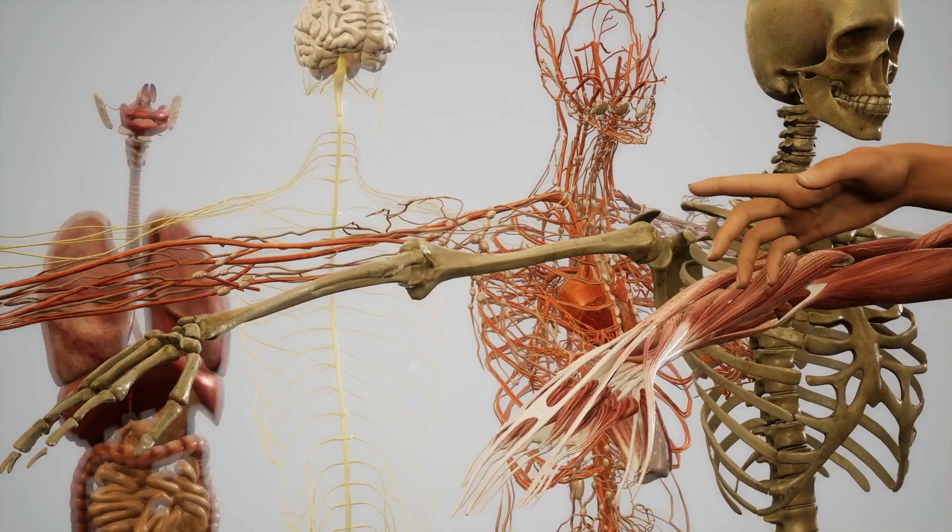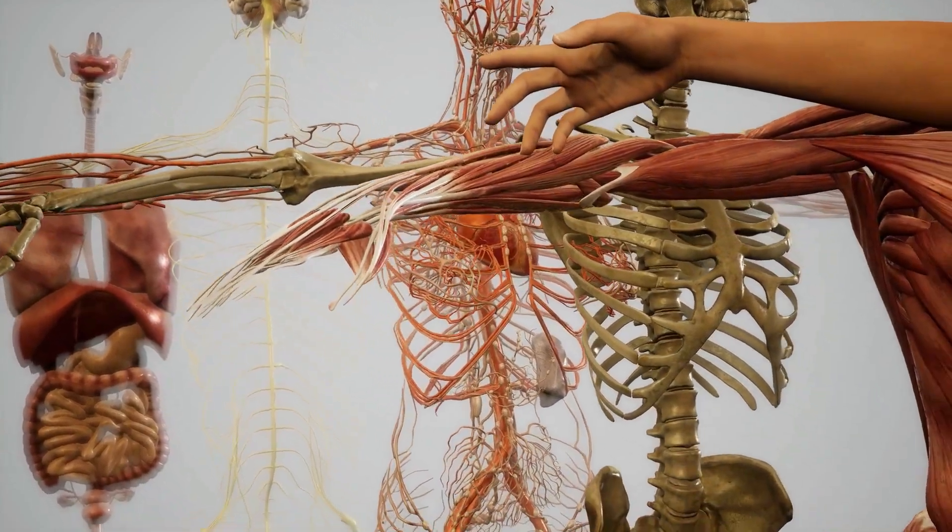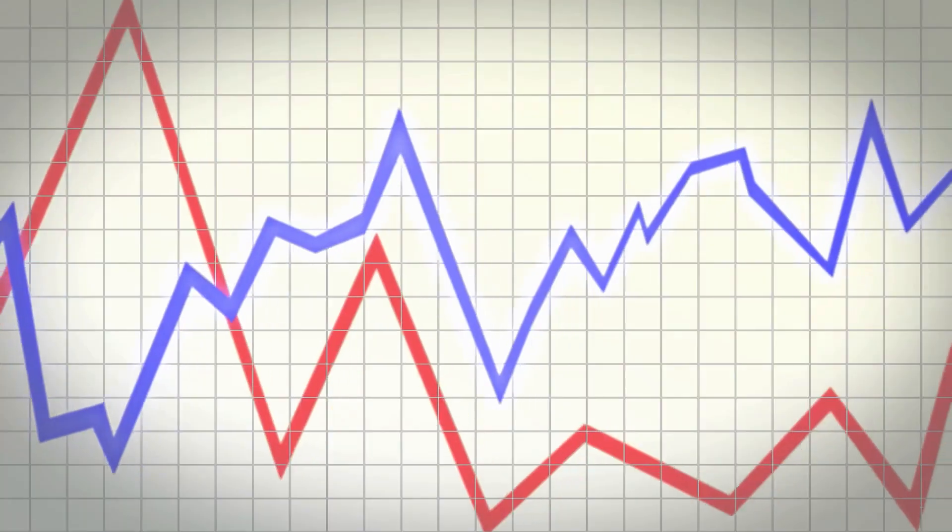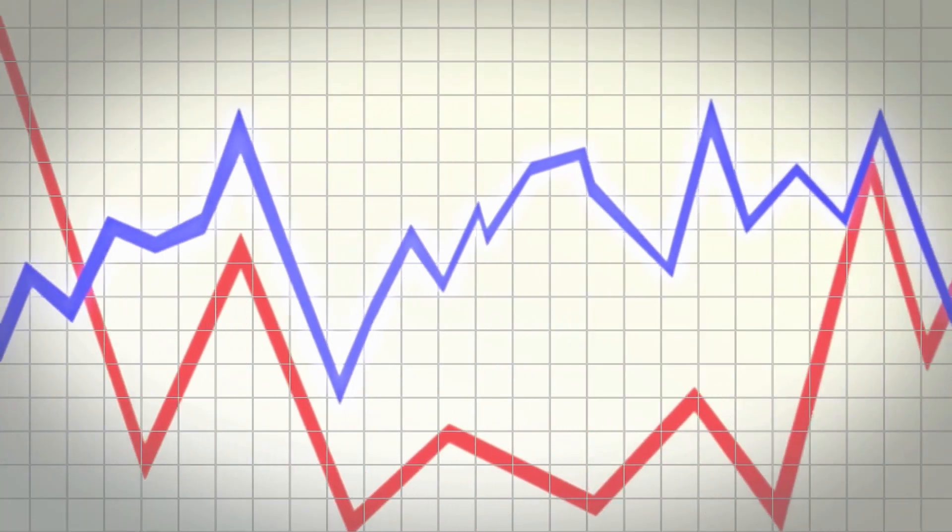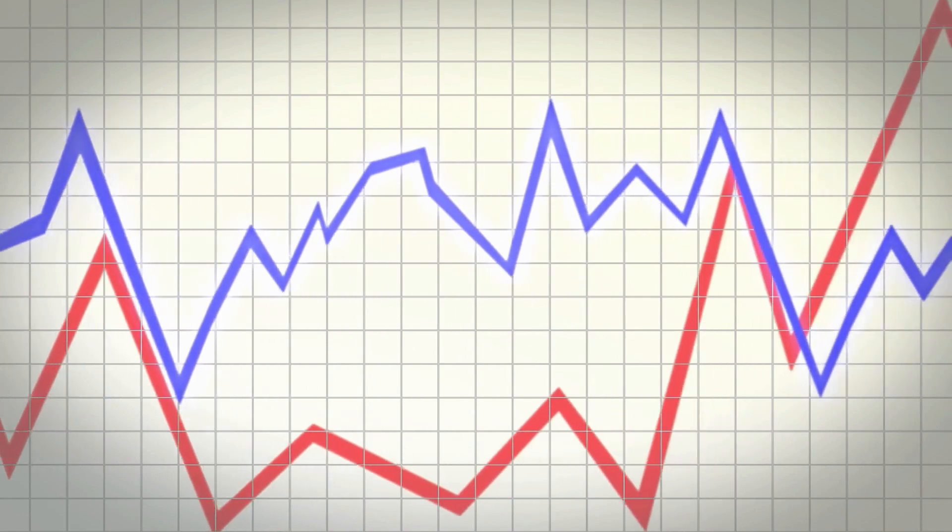When we focus on a single value, like an average, we do ourselves a disservice in understanding the reality of any situation we are in. Now, this doesn't just apply to biological measures like body temperature, height, and pregnancy. Anytime we compute an average, there is always a distribution of some kind that that average came from.